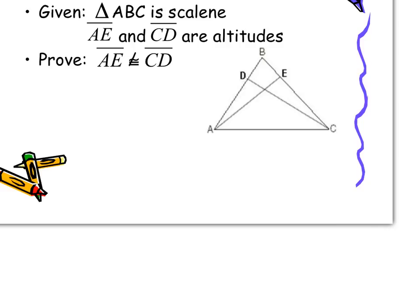Let's try one more. In our given, we know that ABC is a scalene triangle — meaning all the sides are different, so we have no congruent sides. We also know that AE and CD are altitudes, which means we have right angles. Our proof says we want to prove that AE is not congruent to CD. Since it's saying not congruent, I know I'm proving something is false — that means an indirect proof. So first I write down our options, and then we're going to assume that AE is congruent to CD.